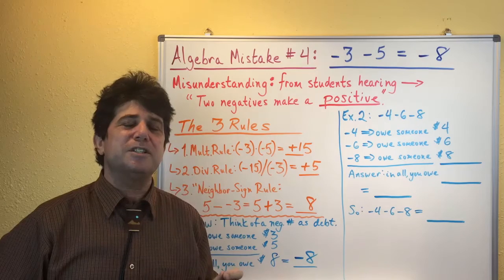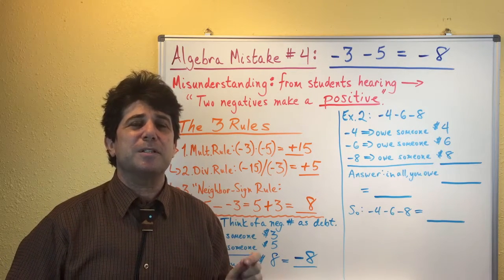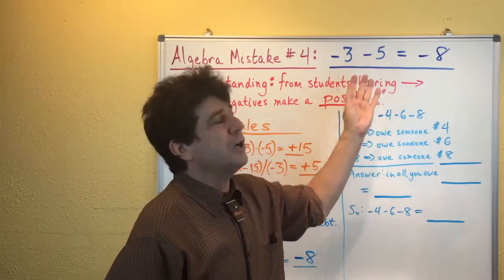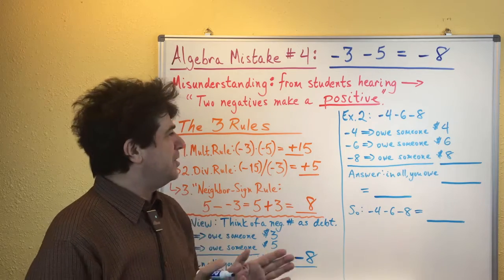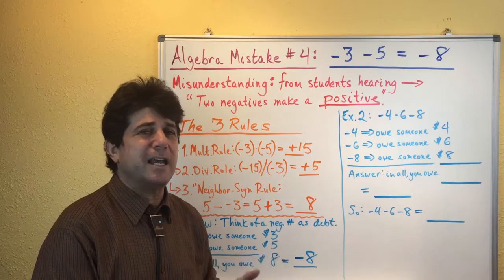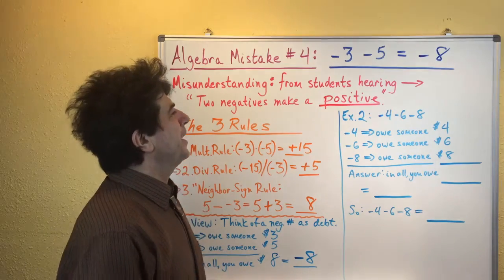Okay, now here's the general idea that you want to carry forward with you. When you have two or more numbers that are all negative, what you do is you keep that negative sign and you add the numbers together because it's just like adding debt to debt, to get more debt. All right, that's how it works.